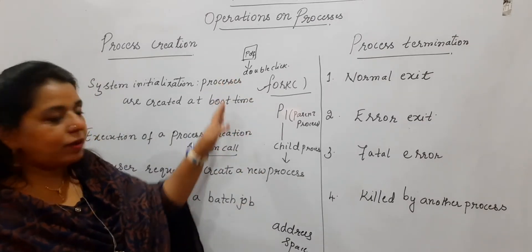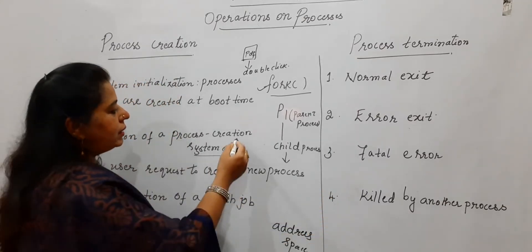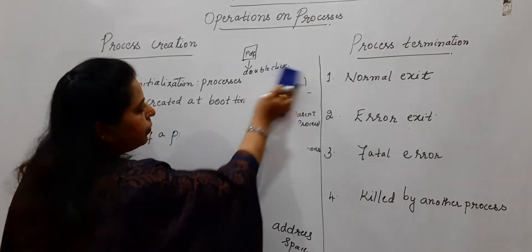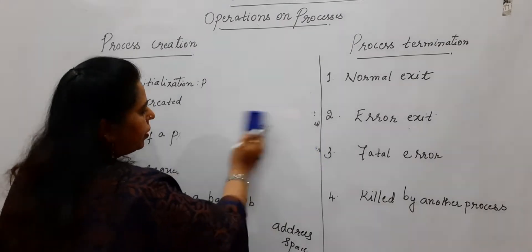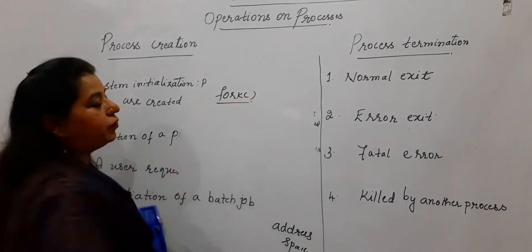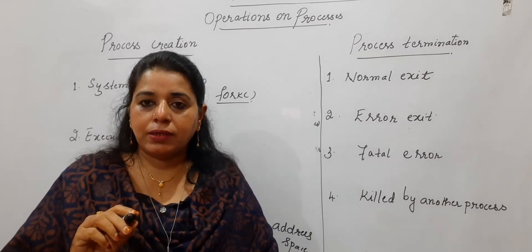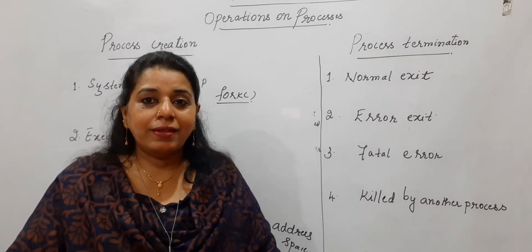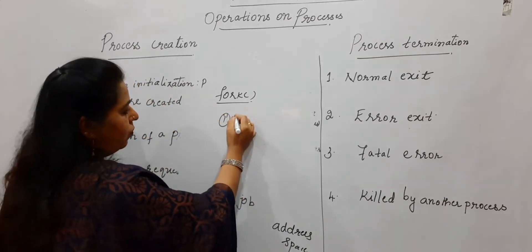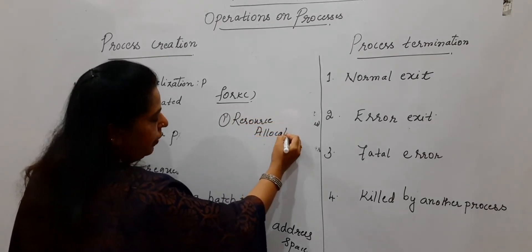You have now seen the four principal events that lead to process creation. But for the second case — the fork system call — you should also know what happens for resource allocation, because resources are allotted to the process, but when a child process is created, what resources does the child get? That is an important aspect to know.